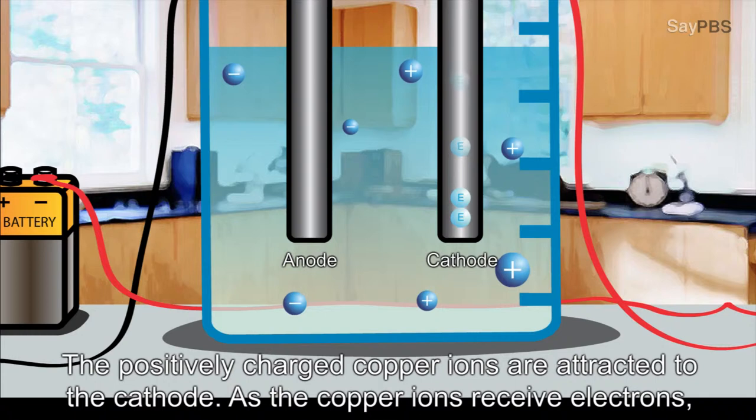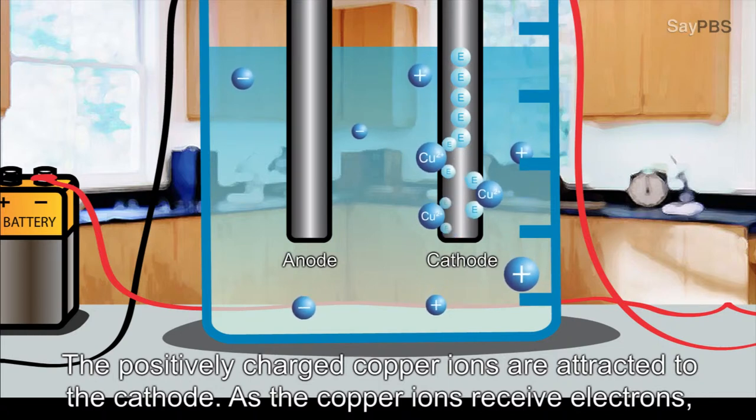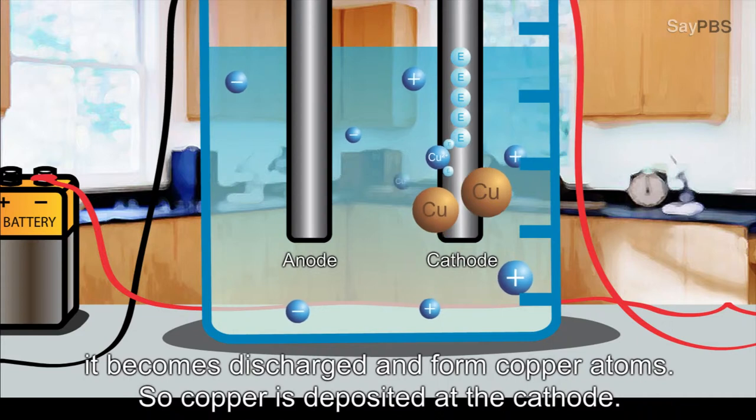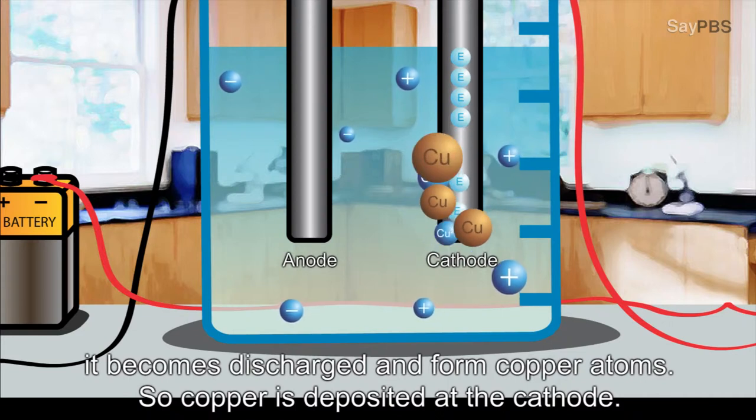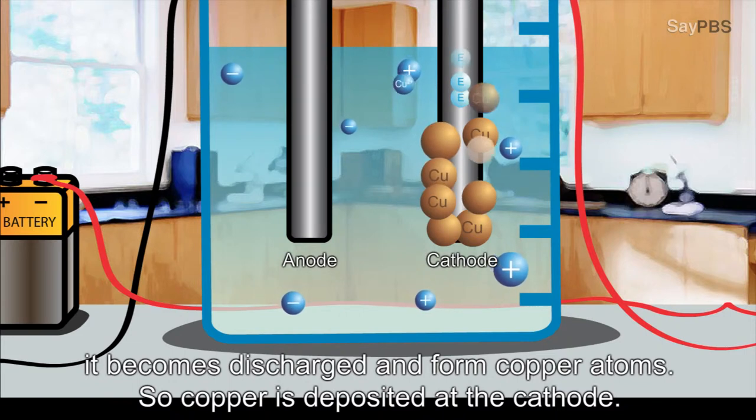The positively charged copper ions are attracted to the cathode. As the copper ions receive electrons, it becomes discharged and form copper atoms. So, copper is deposited at the cathode.